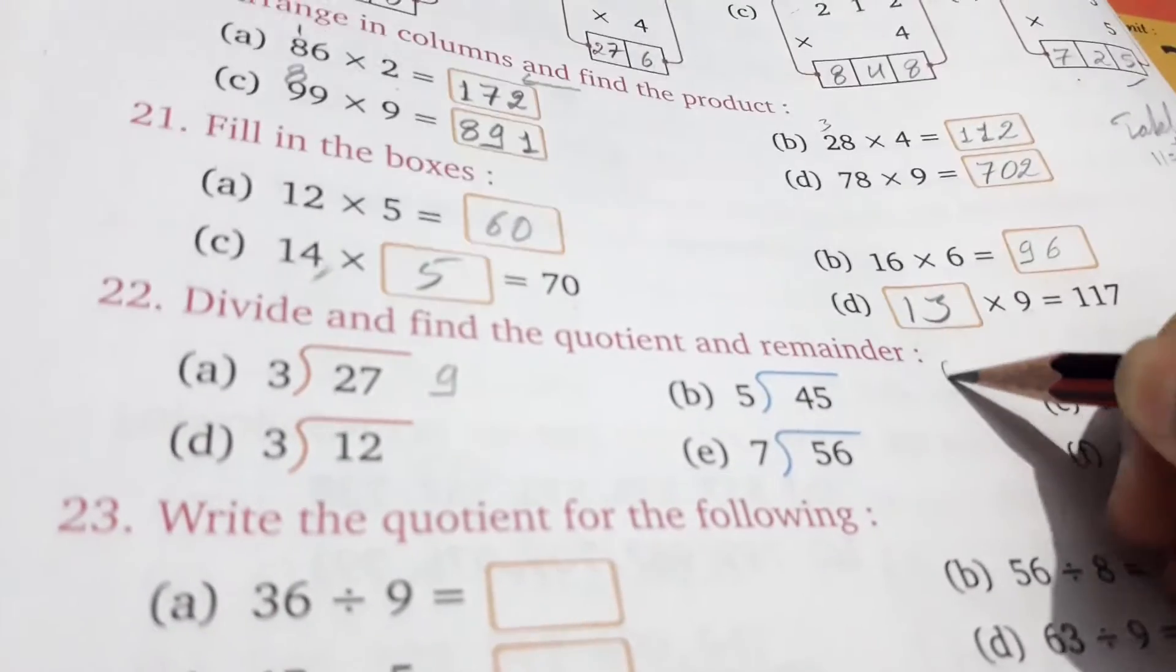Question number A. Okay? This is question number A. You will have to write it. So, you have to write it in your notebook. Next, 23. So, 22 is in copy.